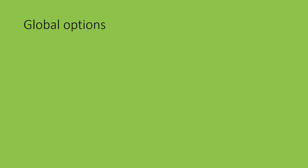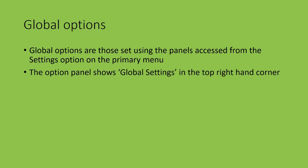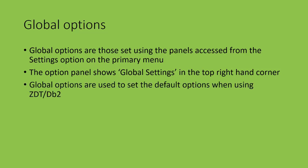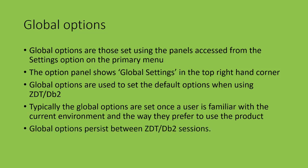Let's look at global options in more detail. Global options are set using the panels accessed from the settings option on the primary menu. The options panel displayed shows global settings in the top right-hand corner. Global options are used to set the default options when using ZDataTools DB2 Component. Every option has a default value. Once you are familiar with ZDataTools DB2 Component in your current environment, you can review the global options and set them based on your preference. Global options persist between ZDataTools DB2 Component sessions.